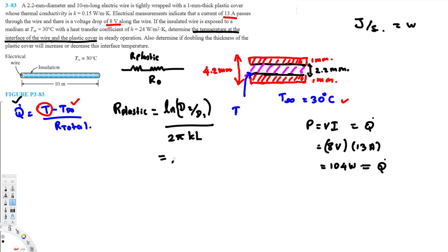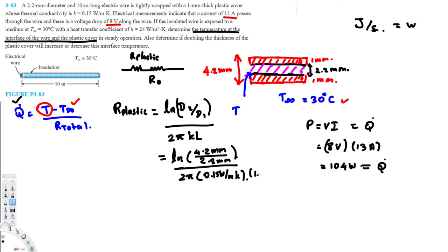Plugging in the values: the outside diameter is 4.2 mm and the inside diameter is 2.2 mm. Thermal conductivity k = 0.15 W/m·K and length L = 10 m. Calculating this gives R_plastic = 0.0686 °C/W.